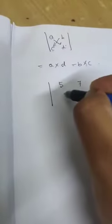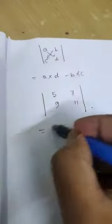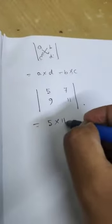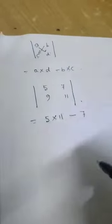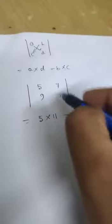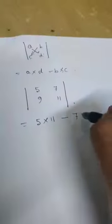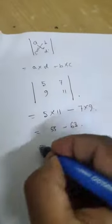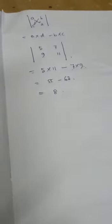For another example, say the matrix is [5, 7; 9, 11]. Breaking along the first row: 5 × 11 minus 7 × 9 = 55 minus 63 = minus 8. So the determinant equals minus 8.